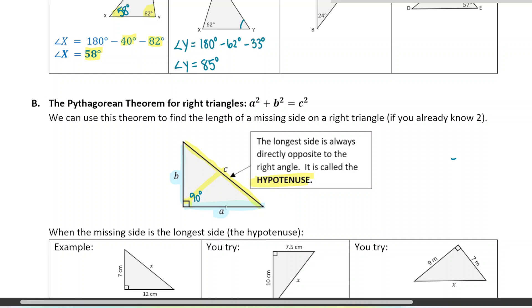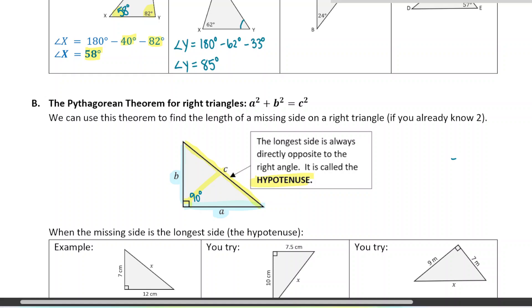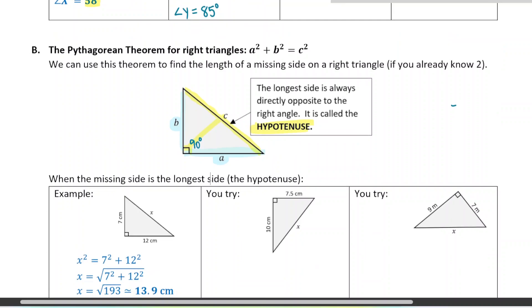The theorem says if you add up a squared plus b squared, it equals the length of side c squared. Let's practice using this to find the length of the hypotenuse when you have the two lengths of the legs.